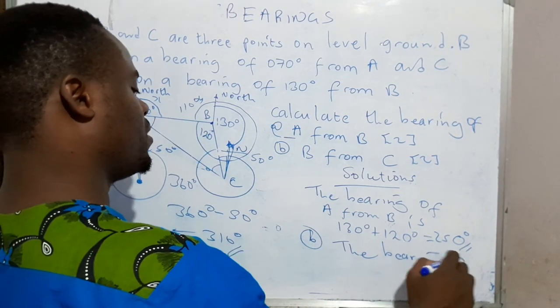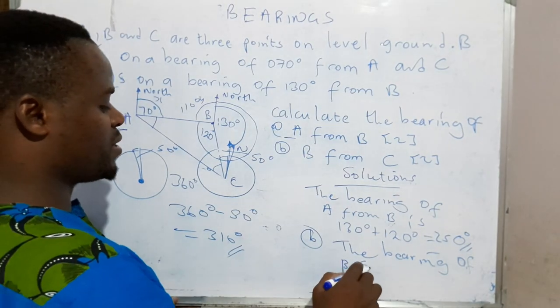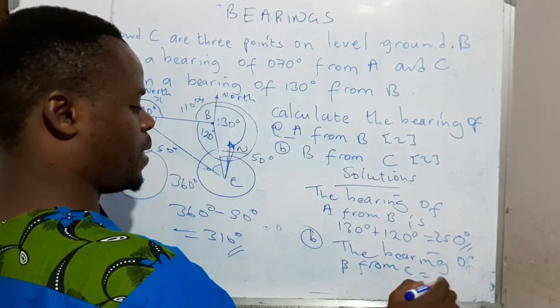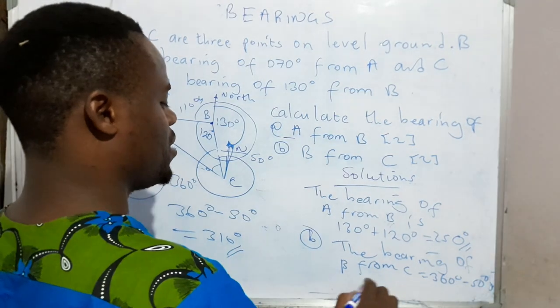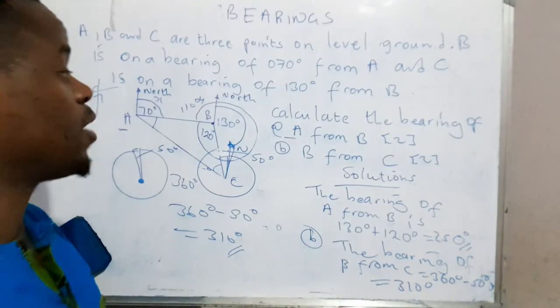So we can say the bearing of B from C is equal to 360 degrees minus 50 degrees, which is equal to 310 degrees. Friends, that's how we solve questions that have to do with bearings.